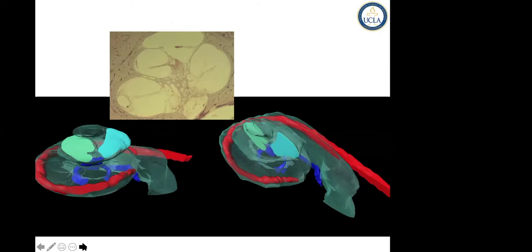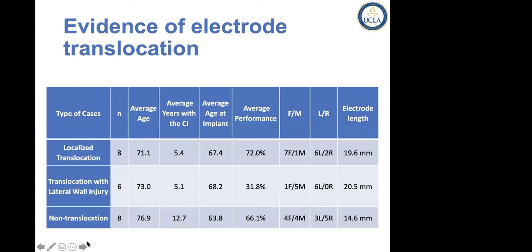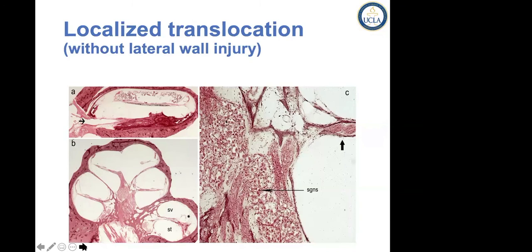Mouse studies clearly demonstrated that if you have more global injury within the cochlea, there is a reduction in speech perception. So it's very important to place a cochlear implant electrode through the round window, and every attention should be paid to minimize intracochlear injury. We still have a lot of work in this area to be done.